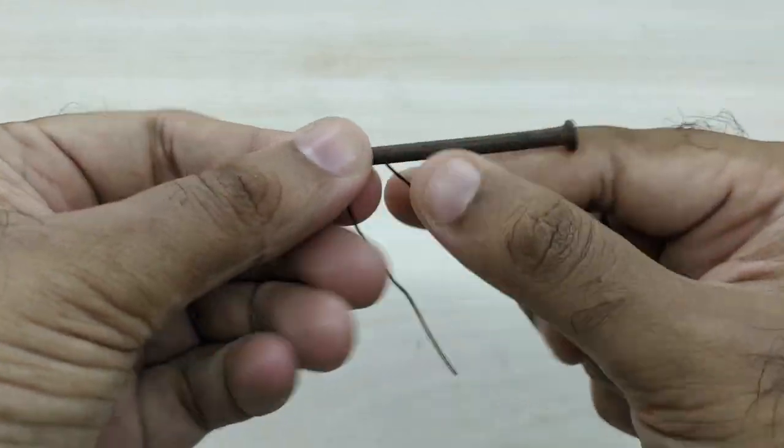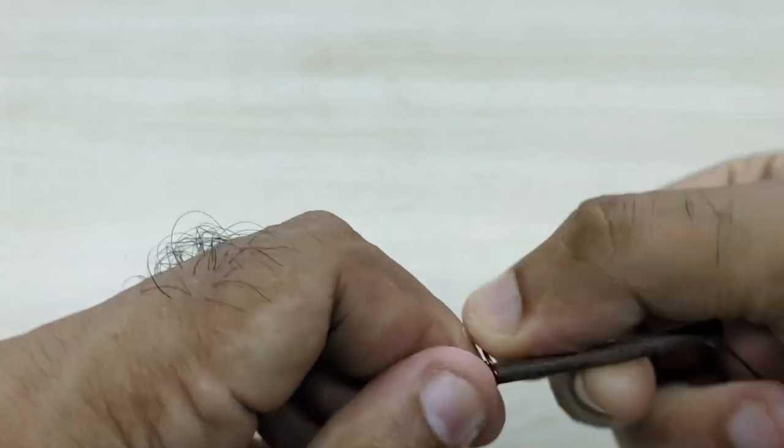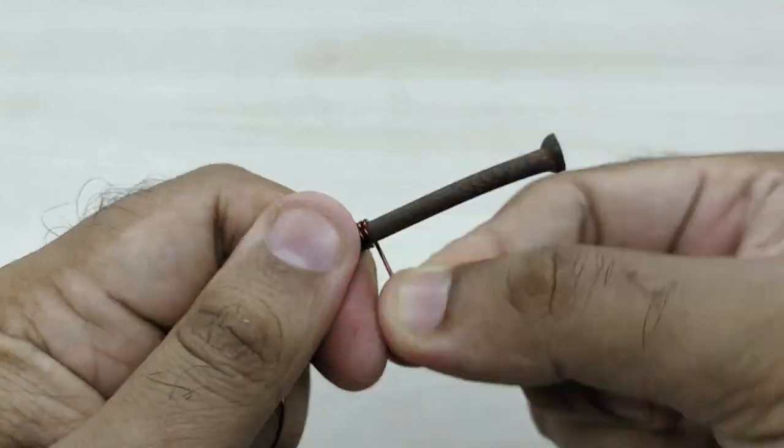First make the coil of the electric bell by winding the copper wire on the iron nail. Try to wind the coil tightly and without any gap in between the turns. This will give more number of turns and hence better magnetic strength.